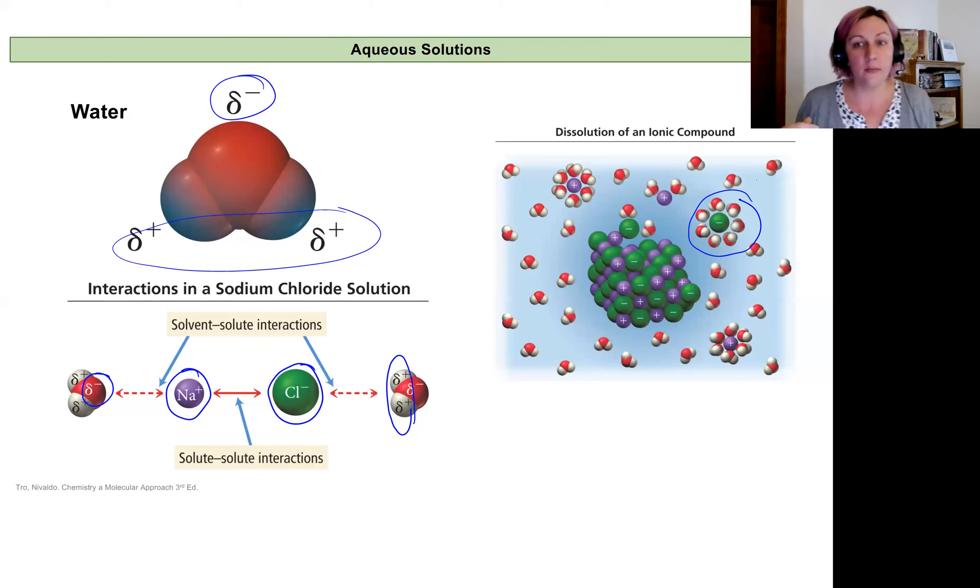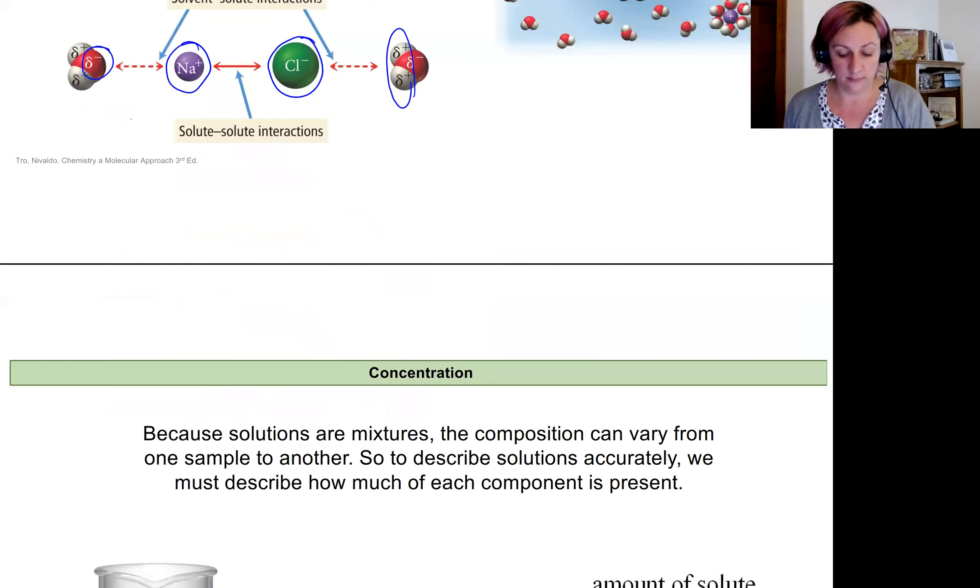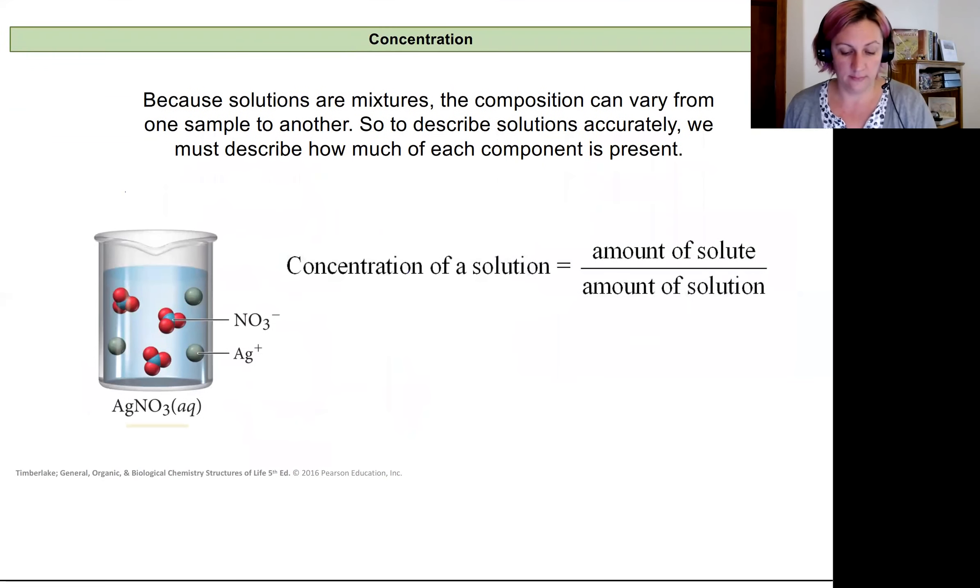Now the amount of solute that dissolves in water can be different depending on the type of compound it is, but it can also be different based on how much we add into it. I can control the amount of my solute that's in my solution, and so we need a way of communicating how much of that solute is mixed with our solution, and that is concentration. We use concentration as a way of communicating the amount of solute and the amount of solvent in a solution relative to one another.